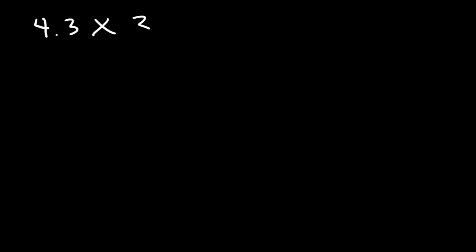In this lesson, we're going to talk about how to multiply decimal numbers. So let's begin with a simple example. What is 4.3 times 3.7?